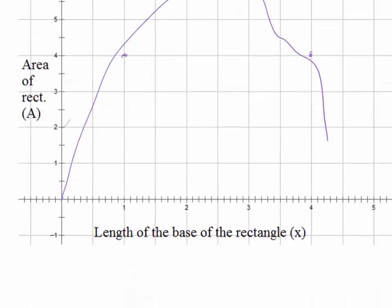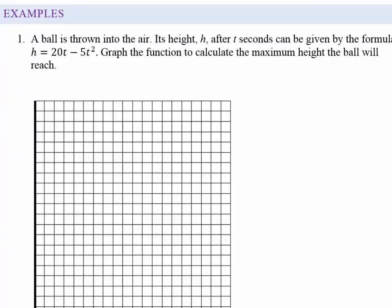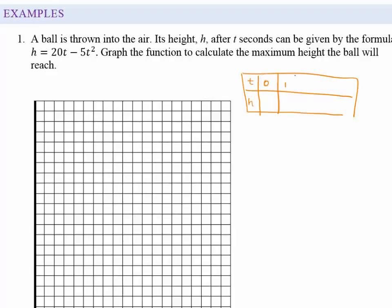Moving on to the next example: a ball is thrown into the air and its height h after t seconds is given by a formula. The question asks us to graph the function to calculate the maximum height. The only way we know how to graph this is to draw up a table of values for t against h, starting from 0 to about 4 seconds.